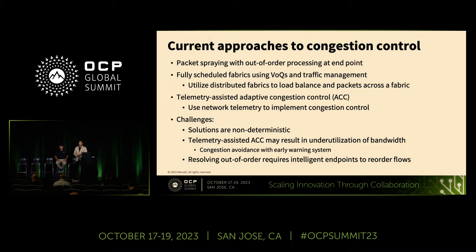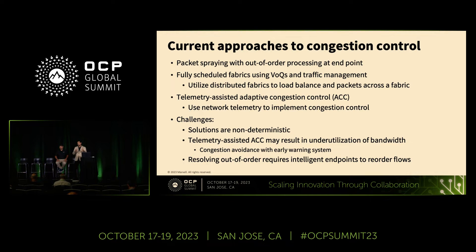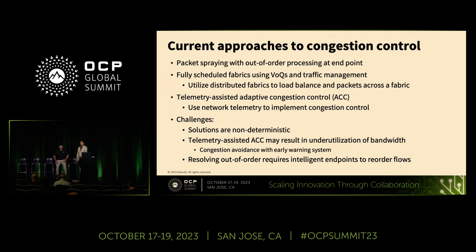There are multiple ways addressing congestion issues already — packet spraying, VOQ, and telemetry adaptive methods — and all of these are great in different scenarios. One of the other alternatives we are proposing is that because you have a mapper already looking at your network and all of your resources from a higher level, and it knows exactly where the job is going to be placed and how jobs will interact, it might be better — or it is an alternative approach — to look at the network and resources from a higher level and configure up front what the flows are.